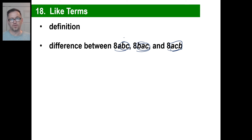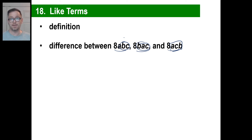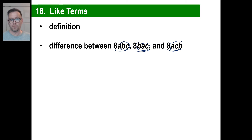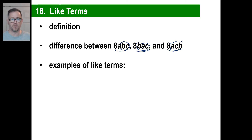They'll try to trick you up a little bit and ask, 'Oh, is this a like term?' All you need to do is look and see if it has the same exact variables with the same exponents. By the way, if you don't see any exponents on these A's, B's, or C's, that tells you each time the exponent is 1 — we just don't bother to write them.